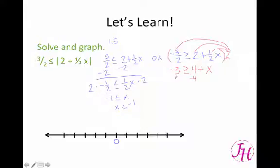Then you can subtract your 4, and so we get negative 7 is greater than or equal to x, which can be rewritten as x is less than or equal to negative 7.